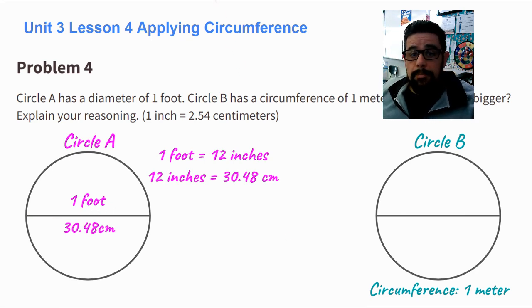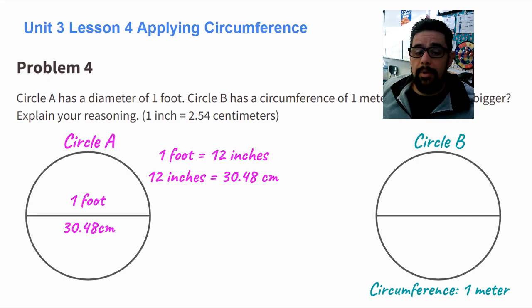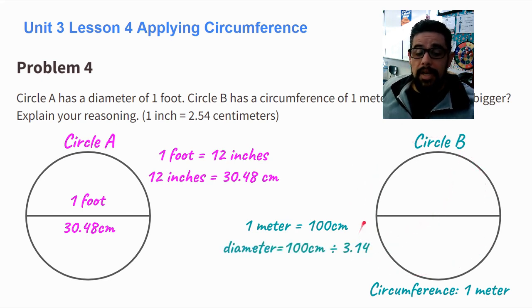Now we're going to go to circle B. In circle B, we're going to take the circumference and find the diameter in centimeters. So 1 meter is 100 centimeters. So the circumference of circle B is 100 centimeters. Now I'm going to find the diameter of circle B, which is going to be 100 divided by pi, 3.14. And I get 31.84 centimeters for the diameter of circle B.